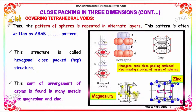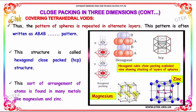This structure is called the hexagonal close-packed structure, or HCP. This arrangement of atoms is found in many metals like magnesium and zinc.